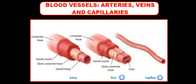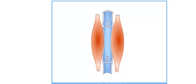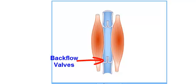Inside the veins, we have structures called valves that serve a very important function. On each side of the vein are skeletal muscles, and the U-shaped structures in the middle of the vessels are the valves. These valves inside your veins prevent blood from backflowing down to the bottom of your body. If you've ever wondered why blood doesn't pool at your feet, it's because these valves prevent that from happening.